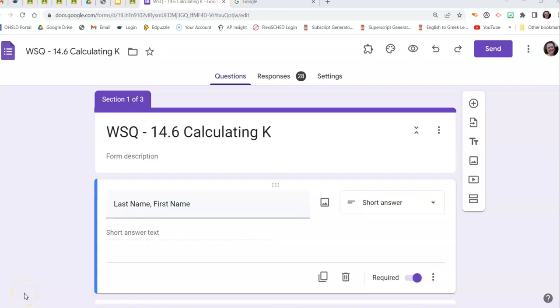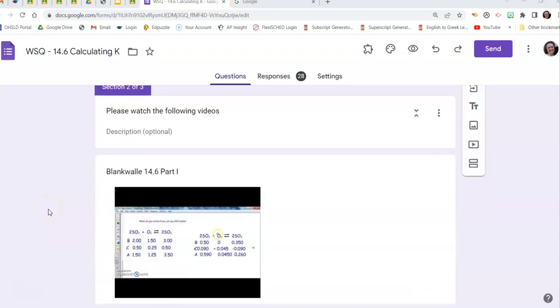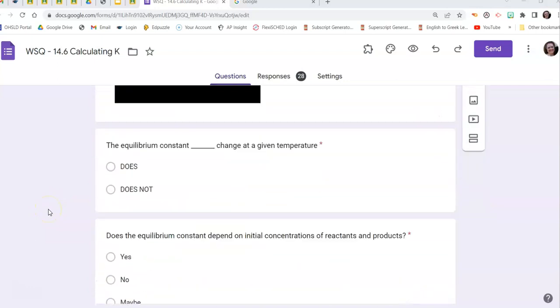Hey AP Chemsters, this is Mrs. Vandula. I'm not bringing you a blank wall, but we're going to go over WSQ today. So this is 14.6 calculating K. I sure hope you did it. So anyway, you watched the video. So here we go.